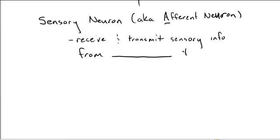And what these do are they receive and transmit sensory information from blank to blank. You're going to get your sensory information on the outer extremities of your body. So it's called your blank system. I said P and S. That's correct. And it's going to transmit it towards your spinal cord and brain. So to your C and S. That's correct.